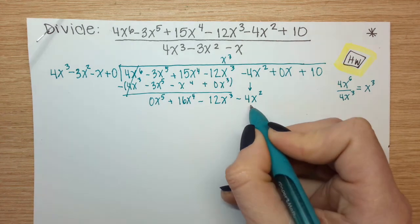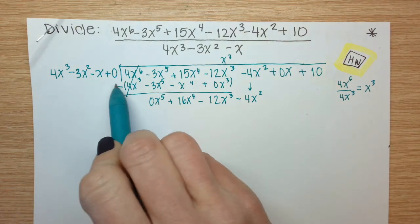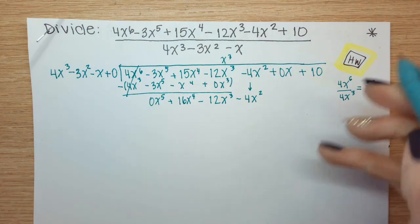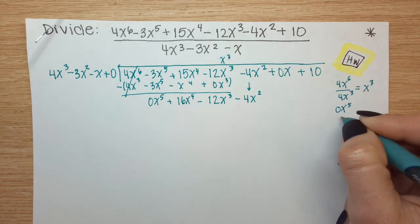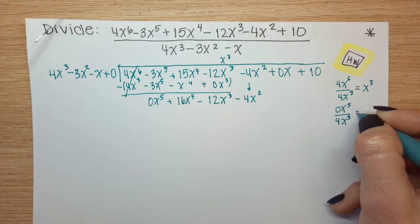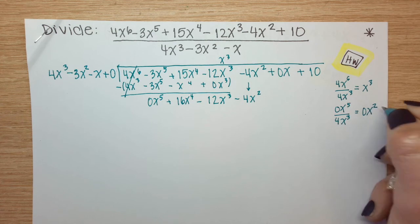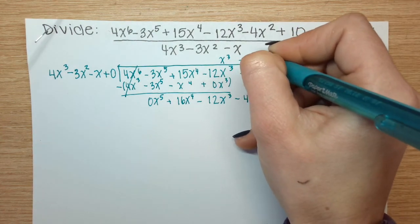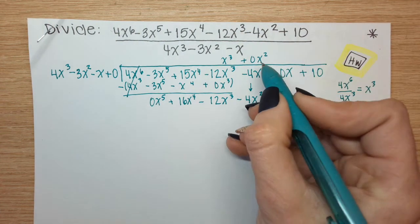After we bring down the negative 4x squared or minus 4x squared, we have four terms, which is what we're dividing by. So we know we're on the right track. Leading term divided by my leading term. 0 divided by 4 is 0x to the second. Even though it's weird looking, treat it the same way. Keep going with the process.